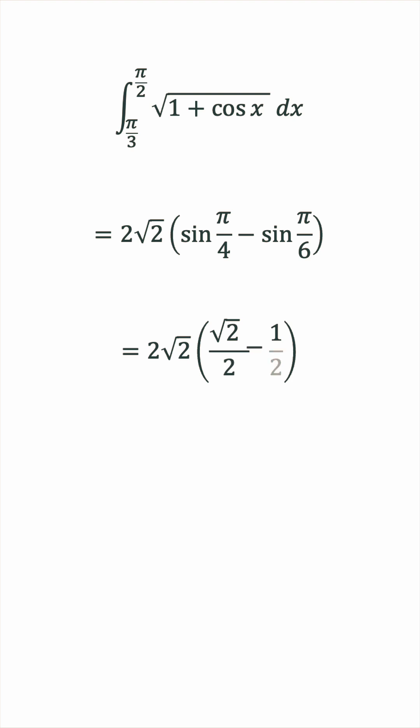So we can combine the fractions. The two outside the brackets will cancel with the denominator of 2. And then we can distribute, which results in 2 minus square root of 2. And that's the final answer.